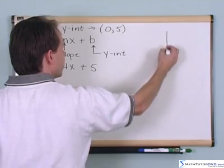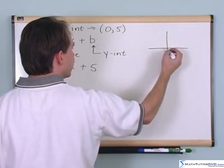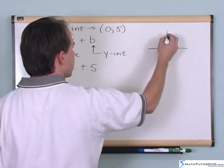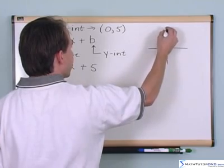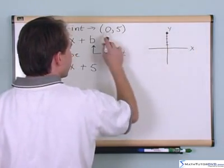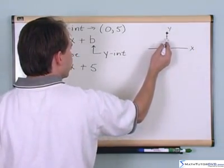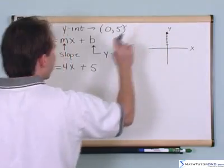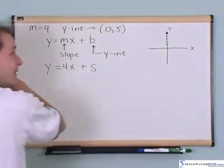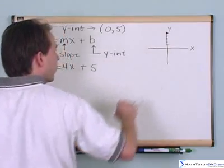Because remember, if I were to plot the point zero comma five, that's going to be up here on the y-axis because I'm plotting zero and then I'm going up one, two, three, four, five. So this is the y-intercept. That is the point that the line intersects the y-axis.